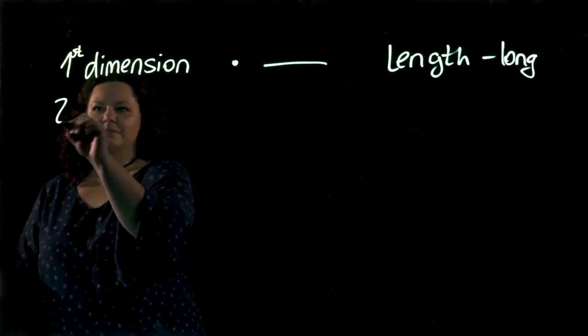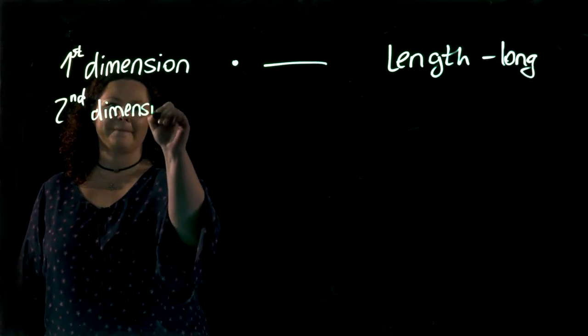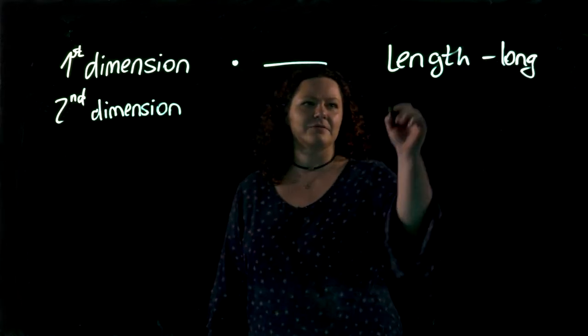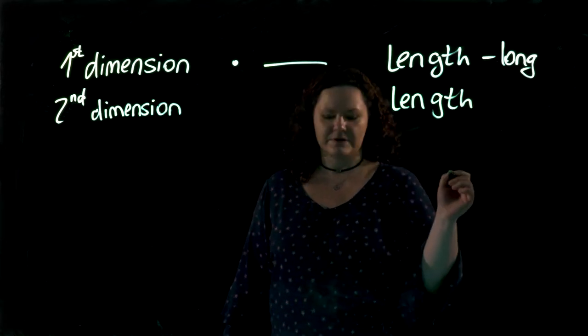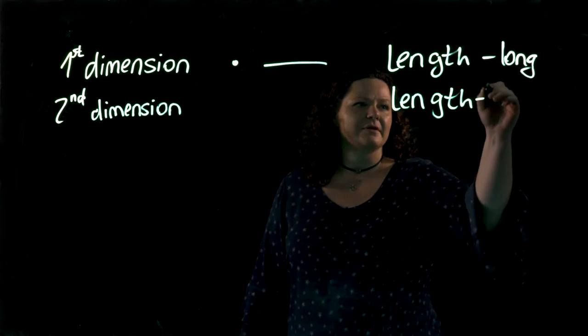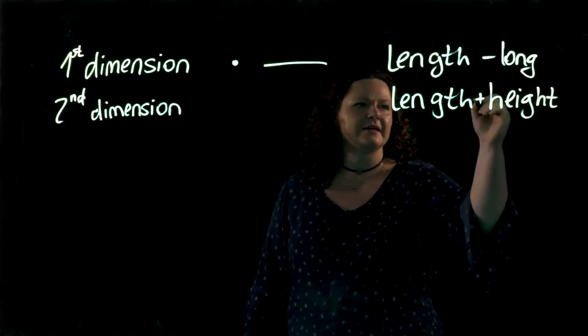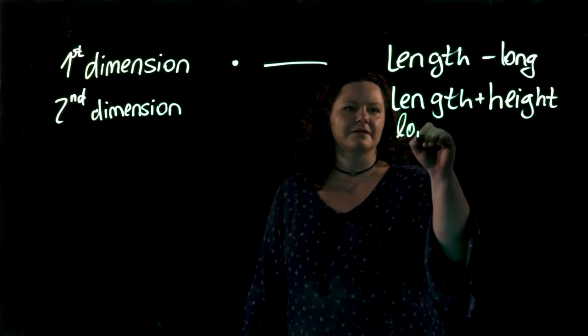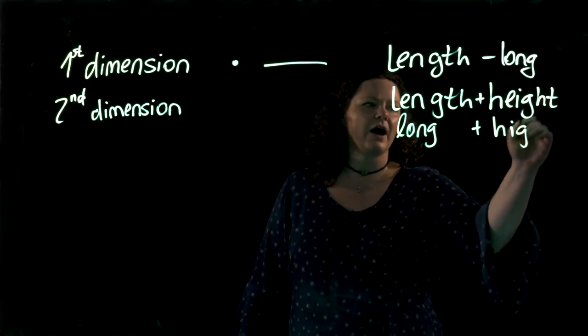The second dimension gives us one more thing. So we again have the length of something but we also have the height. Length and height. So we can say something is long and something is high.